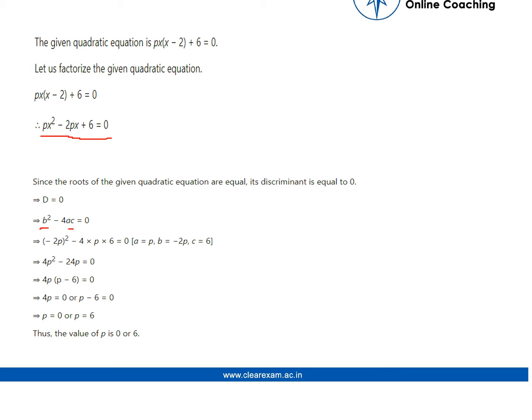You will get the B and AC. You have to put the values of B and AC in this B squared minus 4AC is equal to 0, and by putting the values you will get the value of p.